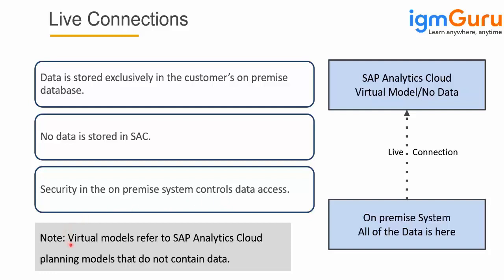Virtual models are used here. Since data is not stored in SAC, we call them virtual models. They are used to refer to the SAP Analytics Cloud data, and planning models do not contain data because since it is virtual, no data is copied. The schematic diagram shows SAP Analytics Cloud establishing a live connection to your remote system. All data is stored in the remote system, and only when you query using the model in the dashboard is the data fetched. Once you close the dashboard, the data is no longer available in SAC itself.